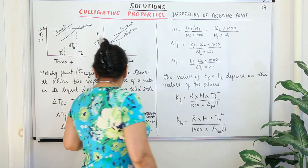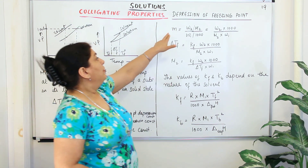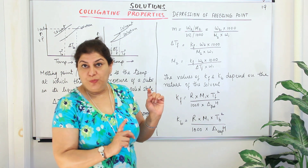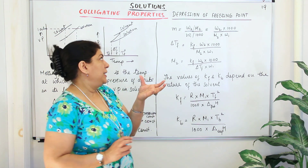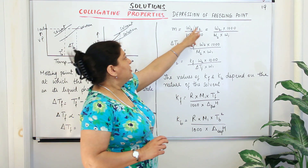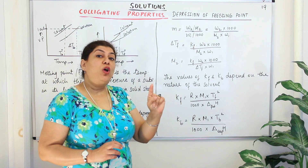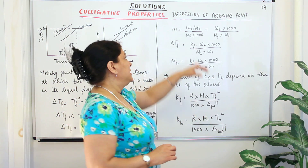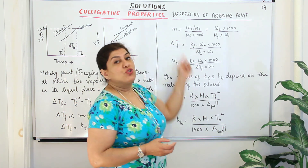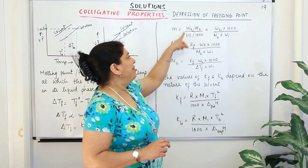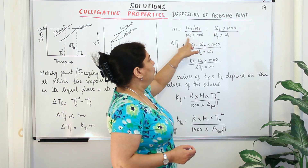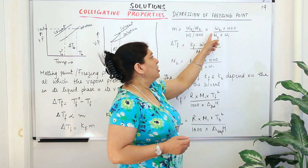Now, how do we express molality? Let w2 be the mass of the solute and M2 be the molar mass of the solute, so w2/M2 gives the number of moles. Dividing by the mass of the solvent in kg — where w1 grams divided by 1000 g/kg gives kg — molality m equals (w2 × 1000) / (M2 × w1). This is exactly the same expression used when calculating delta Tb.